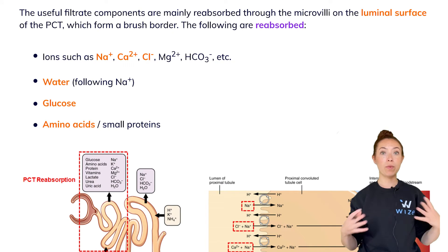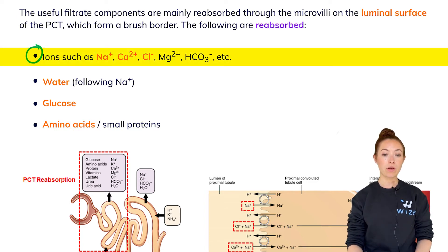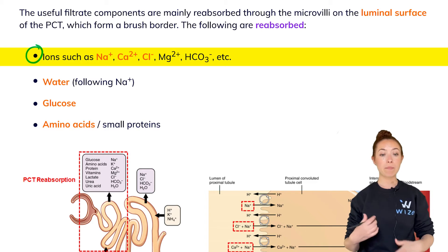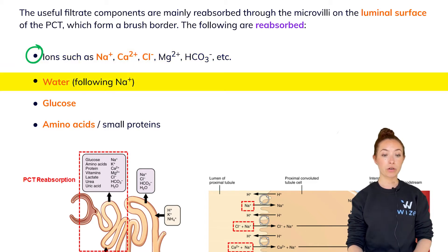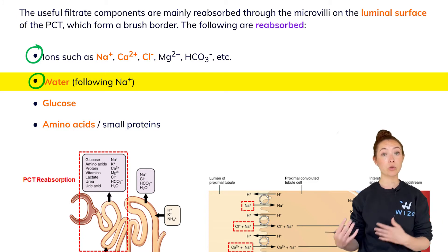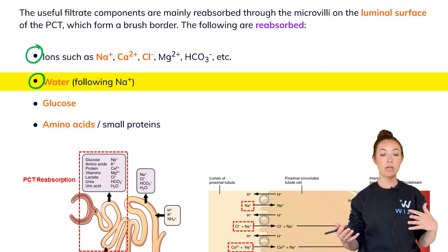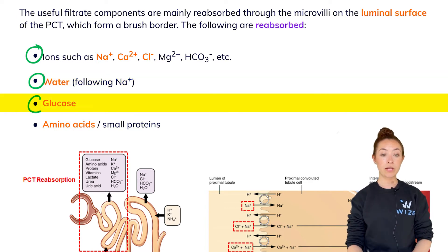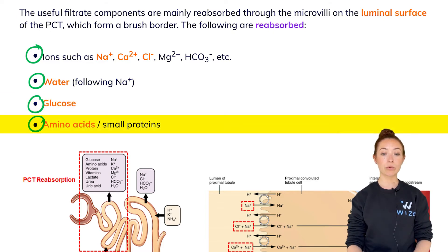We want to reabsorb everything that's still useful. Things that are still useful for our body typically are ions such as sodium, calcium, chloride, magnesium, bicarb, as well as water. Water typically is reabsorbed because it follows the sodium or where the sodium goes. So it's a passive process. We often call that isoosmotic reabsorption because the water just follows the sodium and glucose is typically completely reabsorbed at the PCT as well as amino acids and small proteins.